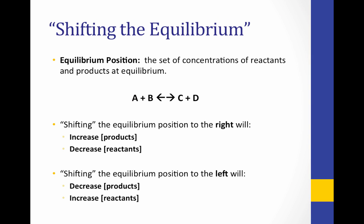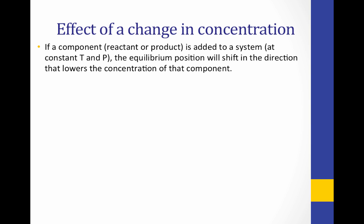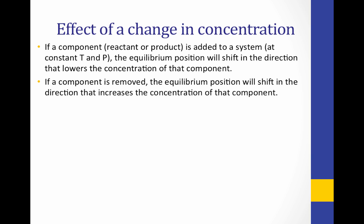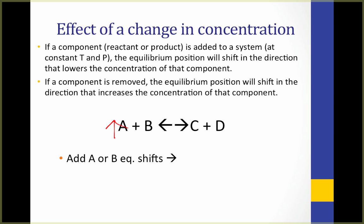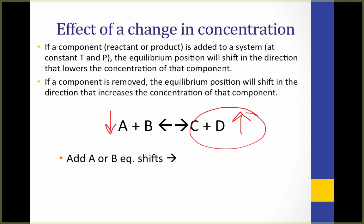Let's look at each of the three possible stresses and see how they affect an equilibrium position. First, let's look at concentration. When we change the concentration of a reactant or a product by adding it to the system, the equilibrium position will shift in the direction that lowers the concentration of that component. If we increase the concentration of A or B, the equilibrium position will shift to use up that extra A and B. Our new equilibrium position will have more C and D than before.